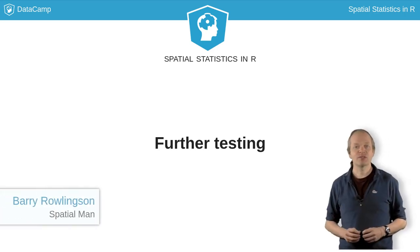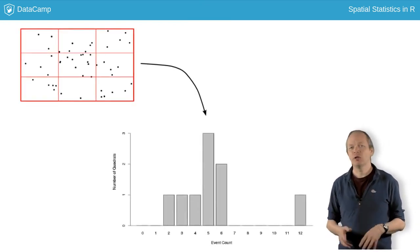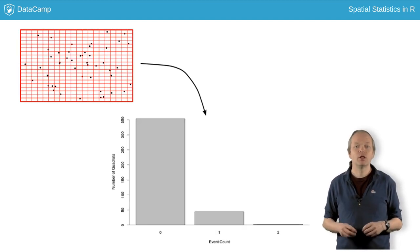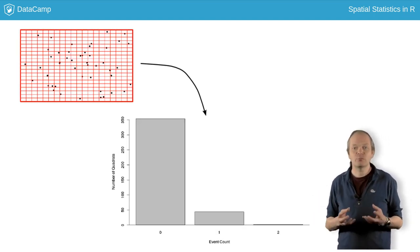One problem with the quadrat test is that you have to choose a set of subregions. Too few, and you don't have many numbers for the statistical test to have much power. Too many, and your regions don't have many points in them, and you lose power too.